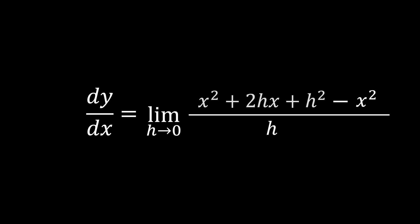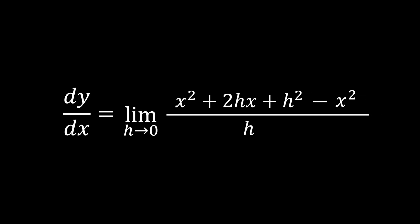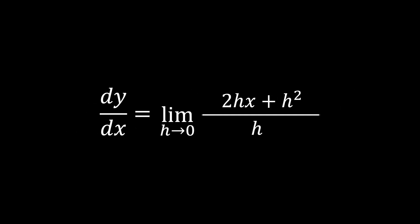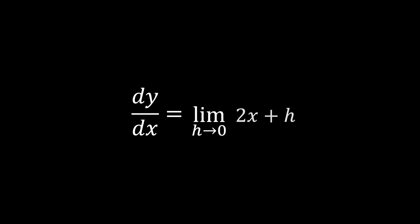Expand the numerator to get x squared plus 2xh plus h squared minus x squared. Cancel out the x squared terms. Simplify by dividing each term by h. Finally, take the limit as h tends to 0, which gives 2x. So, the derivative of x squared is 2x.